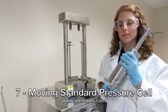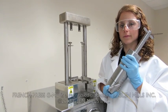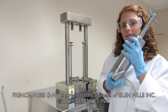Moving the standard pressure cell into the French Press GM. Note, it is heavy, about 20 pounds or 9 kilograms.